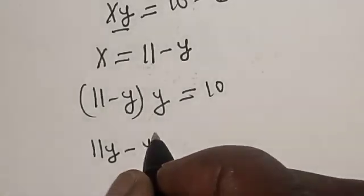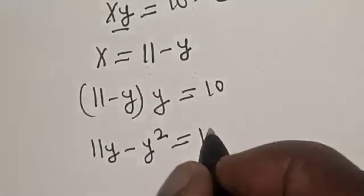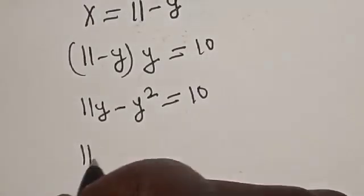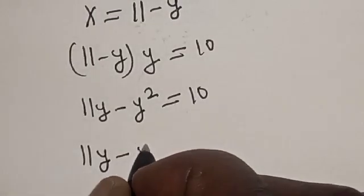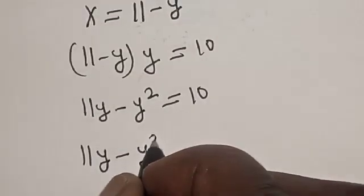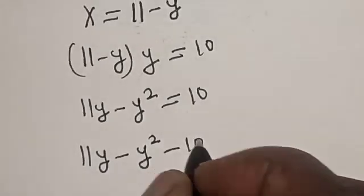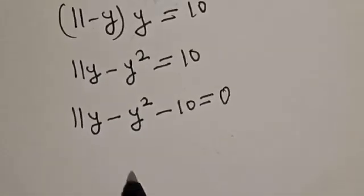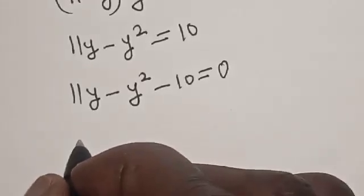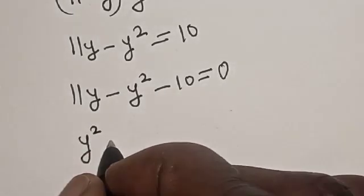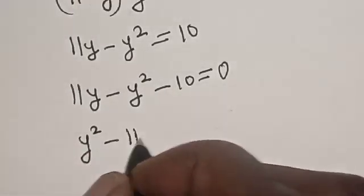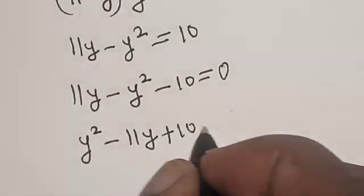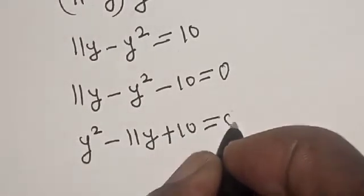So, 11y minus y squared is equal to 10. And this gives 11y minus y squared minus 10 is equal to 0. Let's rearrange. We have y squared minus 11y plus 10 is equal to 0.